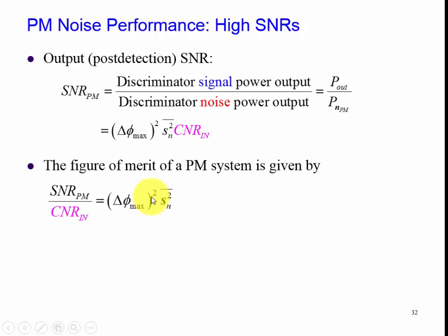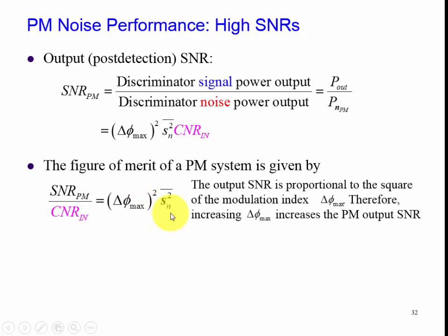And it's governed by the squared. So in other words, the output signal to noise ratio is proportional to the square of the modulation index delta F max. Therefore, increasing F max increases the phase modulated output signal to noise ratio. So as we increase phi max here, we increase our signal to noise ratio, which is a good thing.